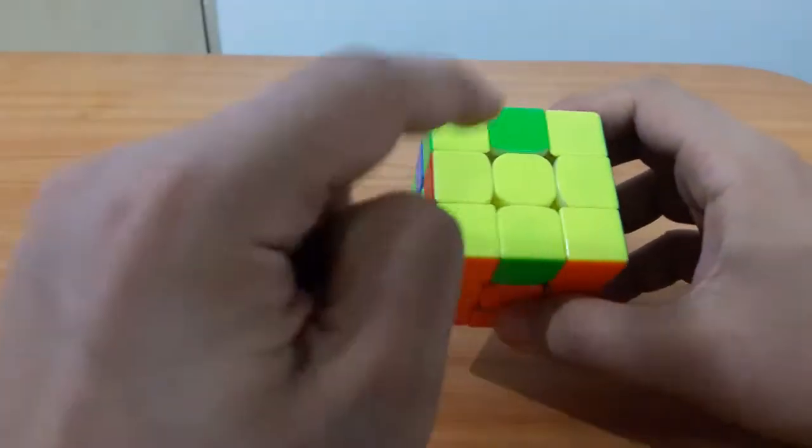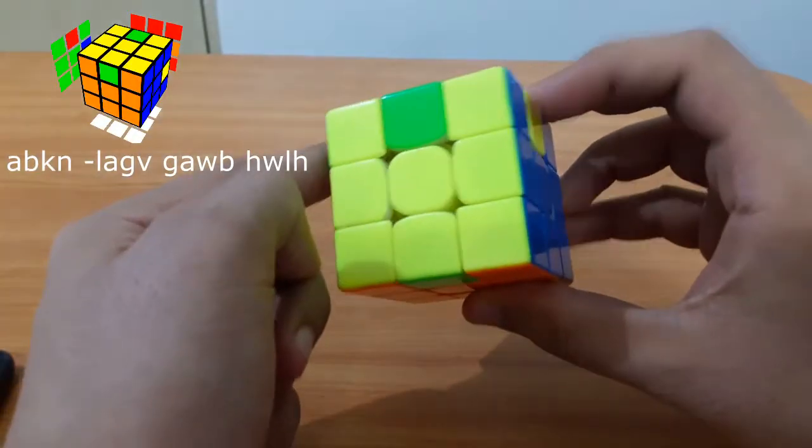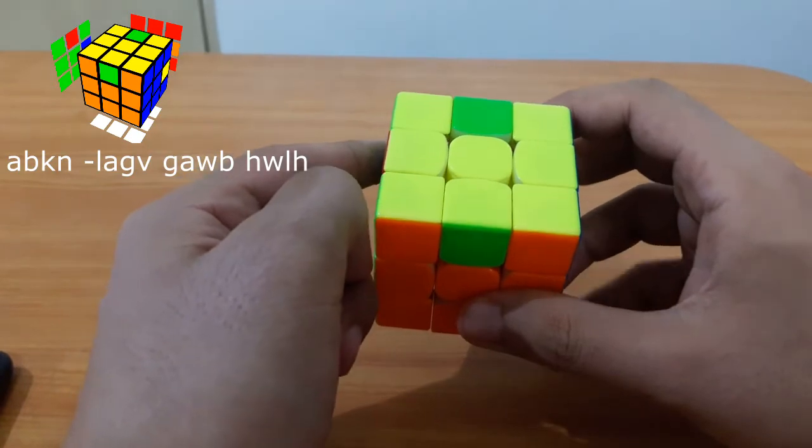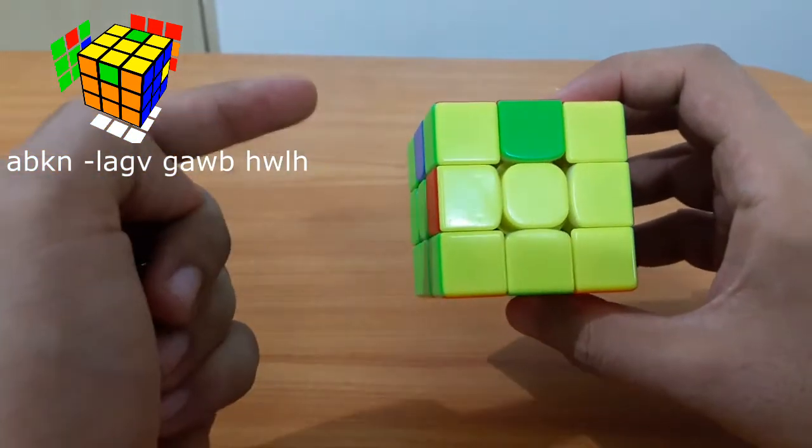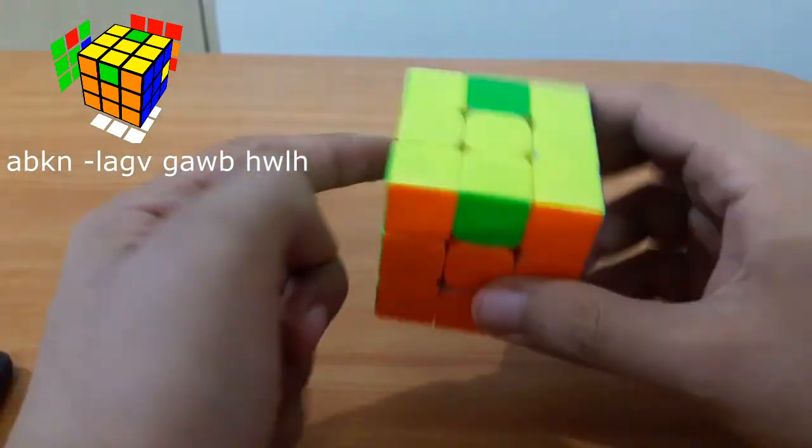The next case that we have is a, b, k, n. This is a 12 mover and it is d, a, h, n in SPEFS.